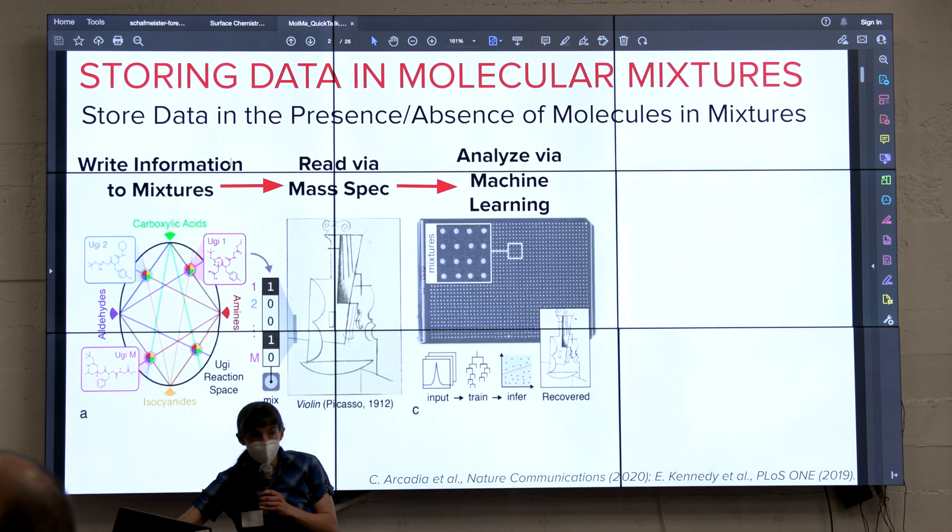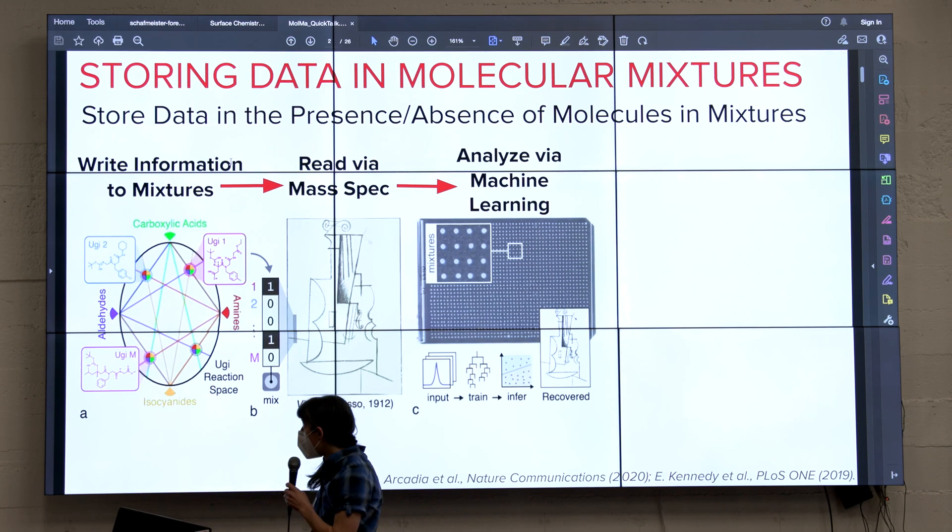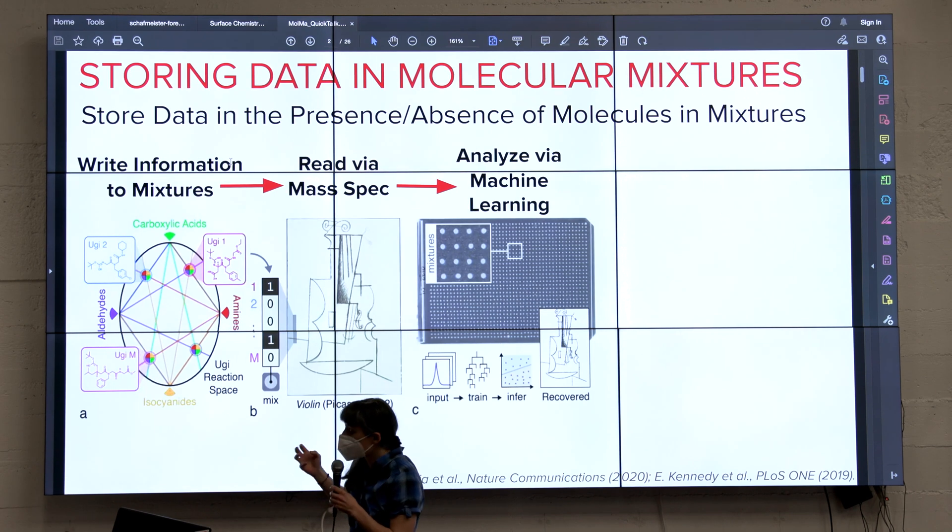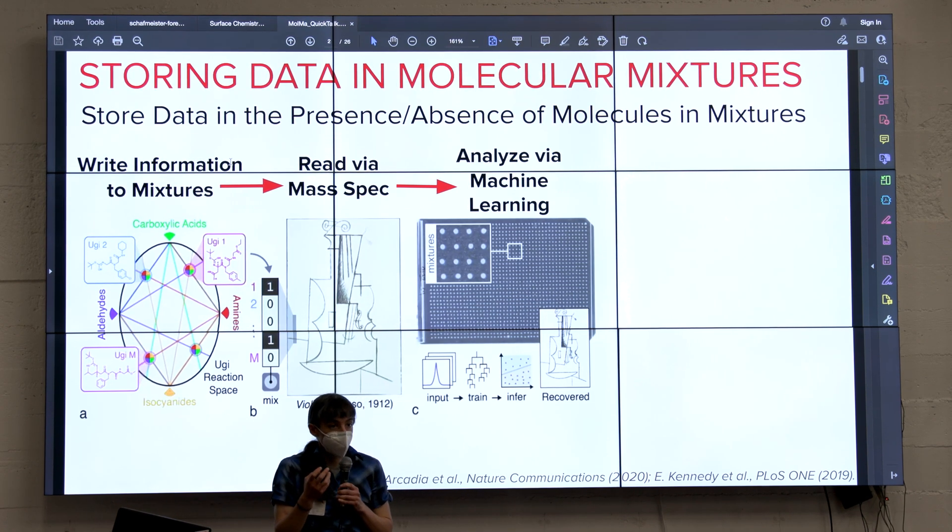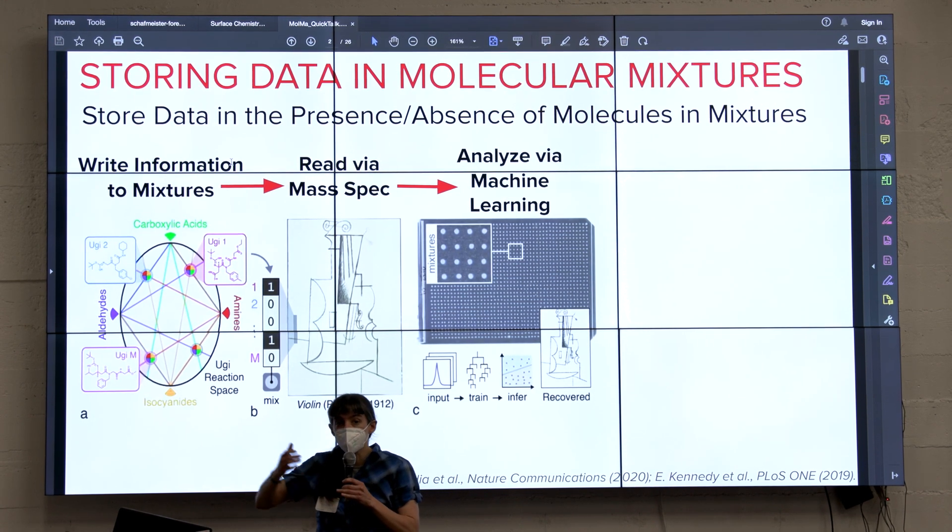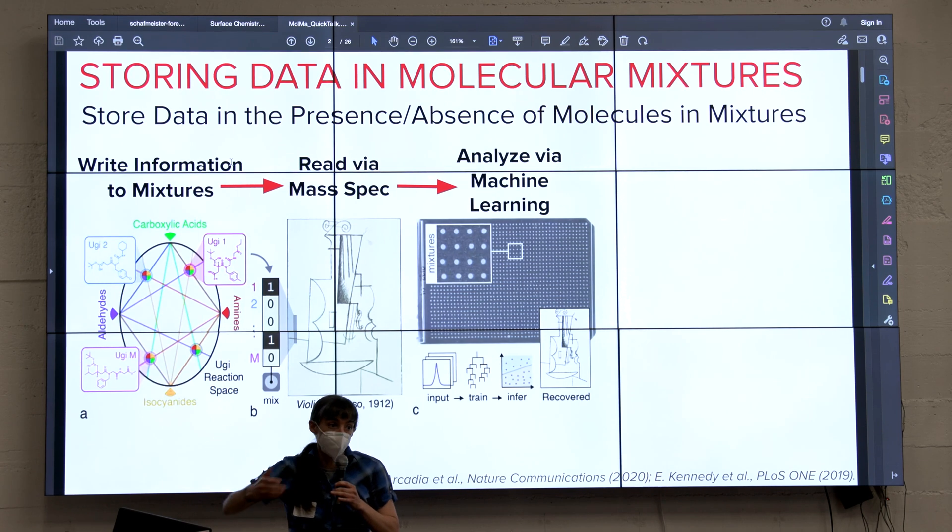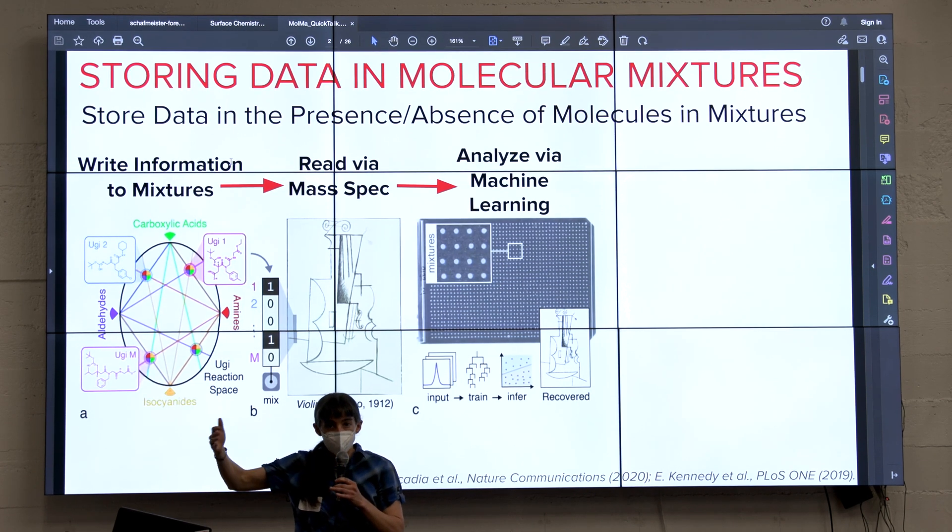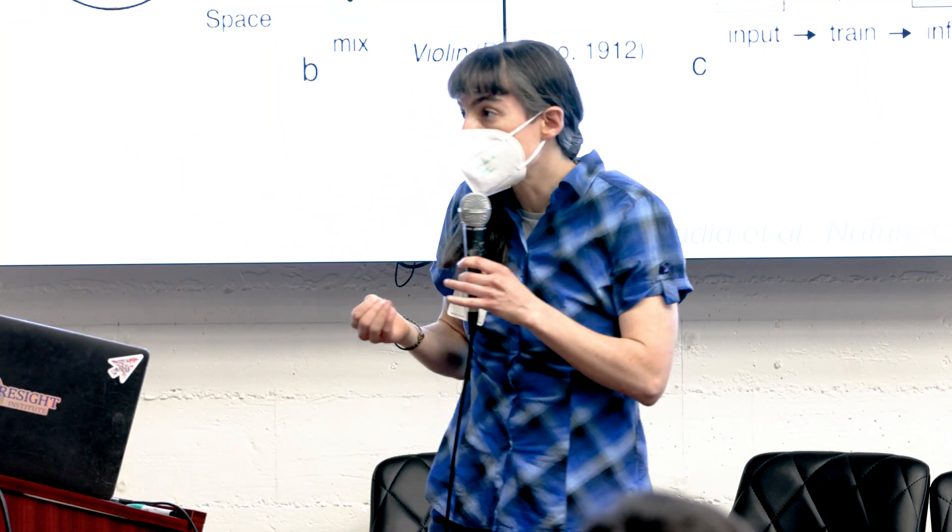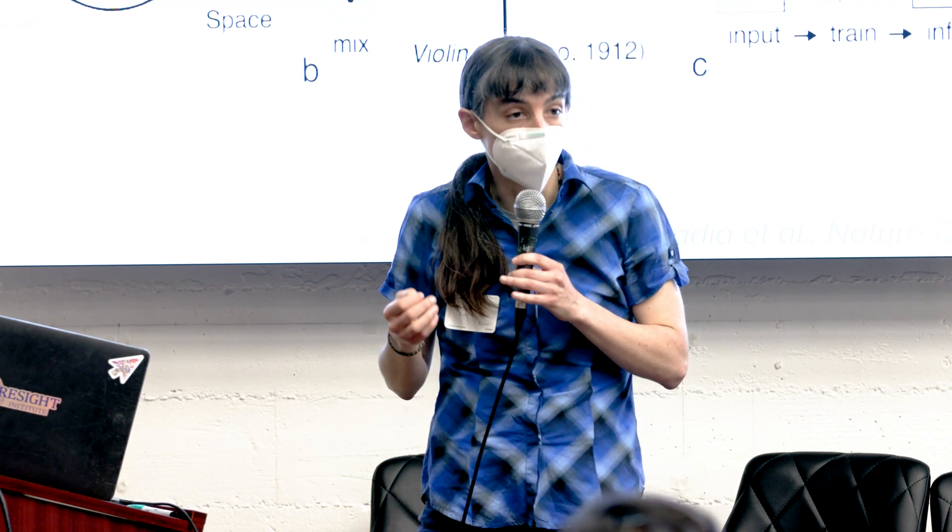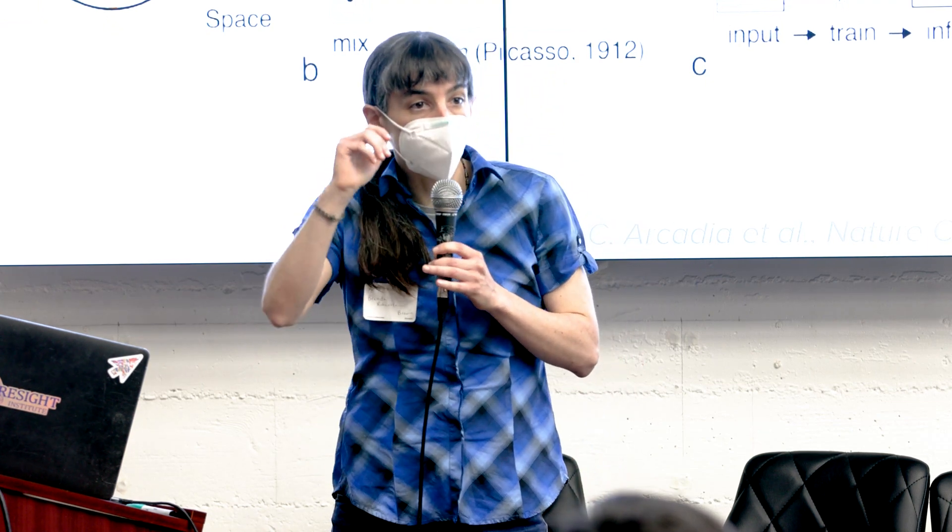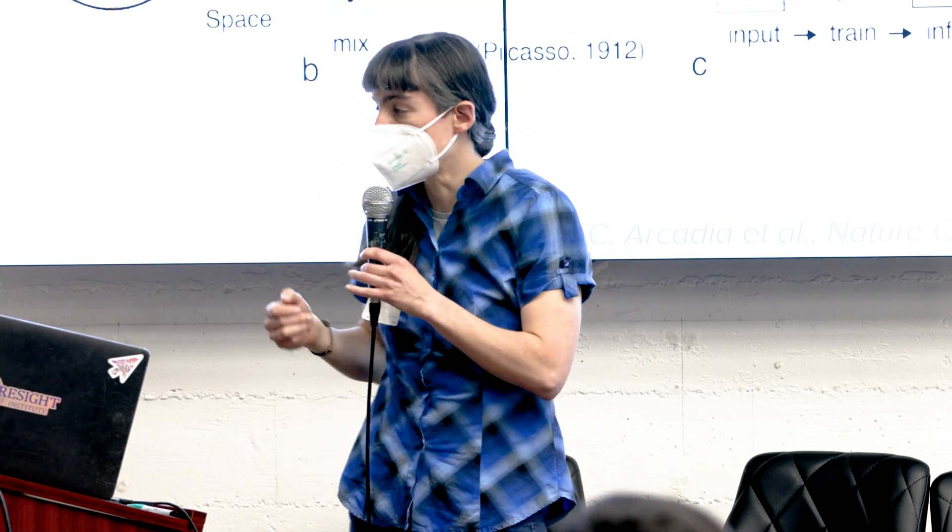The motivation for this is our group's work on storage and computation. We've thought about how to store large amounts of information in mixtures of small molecules. This is a new paradigm. Typically, people store information in polymer sequences—ordered sequences of nucleotides or amino acid units. But our approach, which is about an order of magnitude more dense, stores information in solutions of small molecules where you encode a bit in the presence or absence of a molecule in solution.